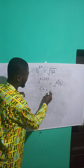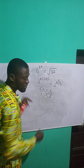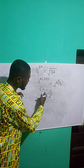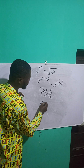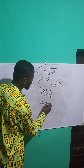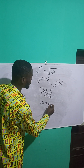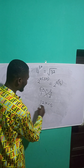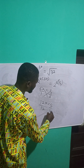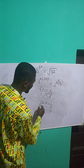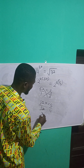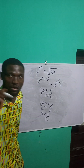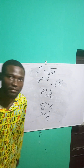So if I cross-multiply, I have 6x times 2, which is 12x, equal to 5 times 1, which is 5. Divide both sides by the coefficient of x, which is 12. So 12 cancels out. So x is equal to 5 over 12. I will catch you in the next video.